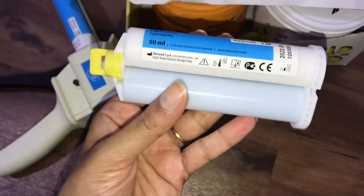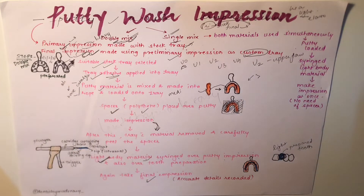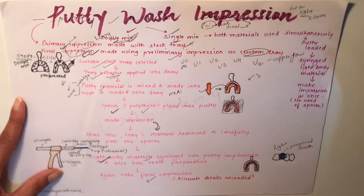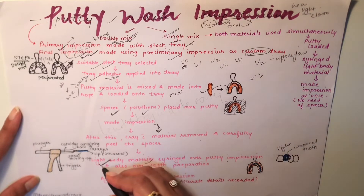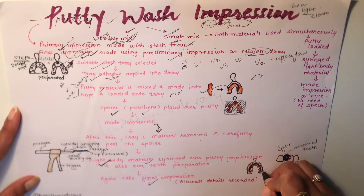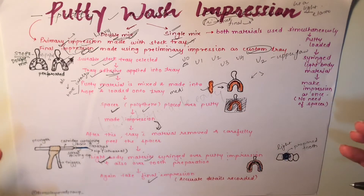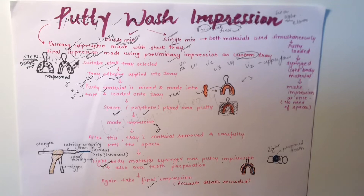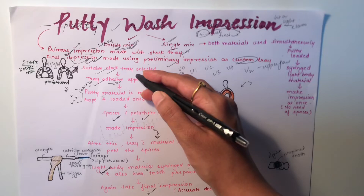To summarize the double mix technique: select the stock tray, apply adhesive, load the putty material as a rope onto the tray, apply the spacer, take the primary impression, peel off the spacer, syringe the light body material over the putty impression and prepared tooth, then take the final impression so that accurate details are recorded.